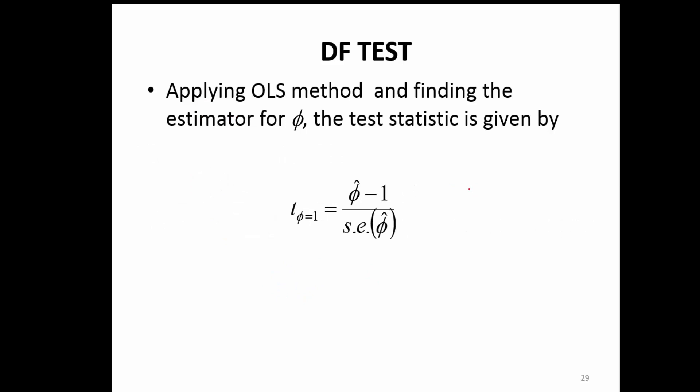How do you find a test statistic? You just apply OLS. You have the regression equation, you estimate the parameters. The parameter is phi. You remember delta is 1 minus phi. We just change it to different symbols, but ultimately we're trying to find what phi is. We can find that out using OLS, and then we can find out the t statistic.